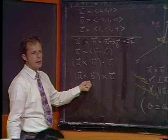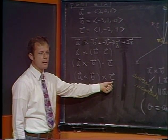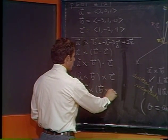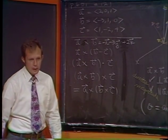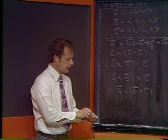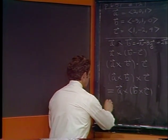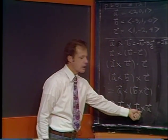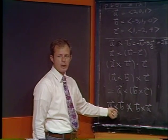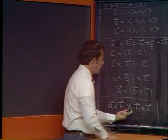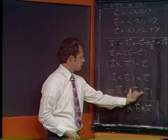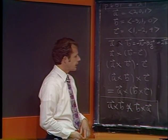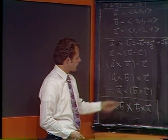Next, is the cross product associative? Is (a cross b) cross c the same as a cross (b cross c)? My suspicion is no. Note also that b cross a = −(a cross b), so commutativity already fails. Let's actually compute both triple products to verify associativity fails.